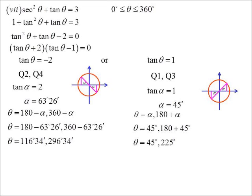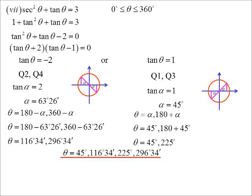Now, certainly with this amount of working out, it's good for a nice, neat final answer. And I like to put them in numerical order because I just think it looks better. So 45, 116, 34, 225, 296, 34. And, well, there we go.